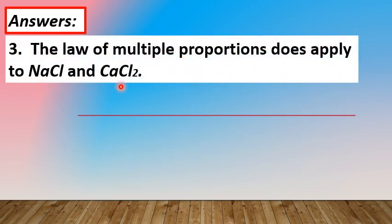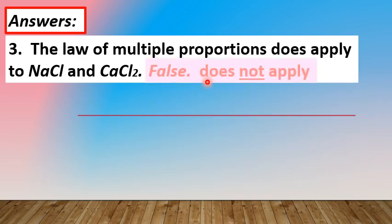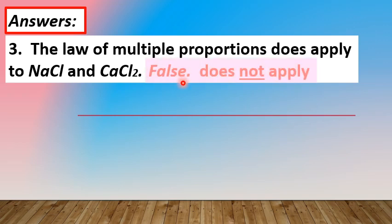Statement number 3: The law of multiple proportions does not apply to sodium chloride NaCl and calcium chloride CaCl2. This statement is false — what is correct is that the law of multiple proportions does not apply to NaCl and CaCl2, for the same reason as statement 2: the two compounds are not made up of the same elements. Although both contain chlorine, NaCl contains sodium and CaCl2 contains calcium, so the law of multiple proportions does not apply.